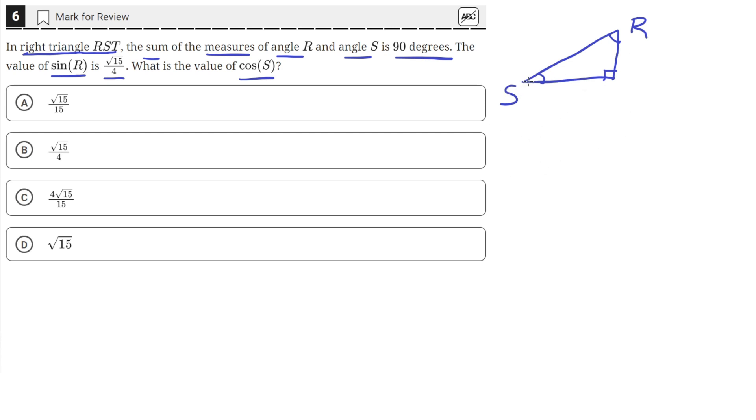So let's make S this angle and R this angle. It's telling us that the sine of R is square root 15 over 4. So sine is opposite over hypotenuse. Opposite to R is this right here, so this is the square root of 15, and then divided by the hypotenuse, so the hypotenuse is 4.